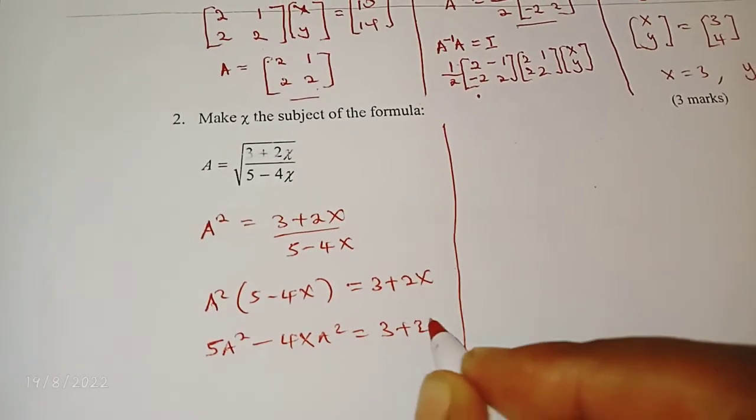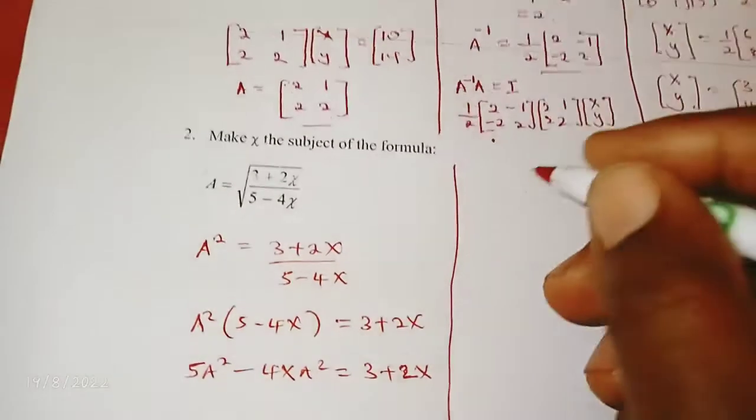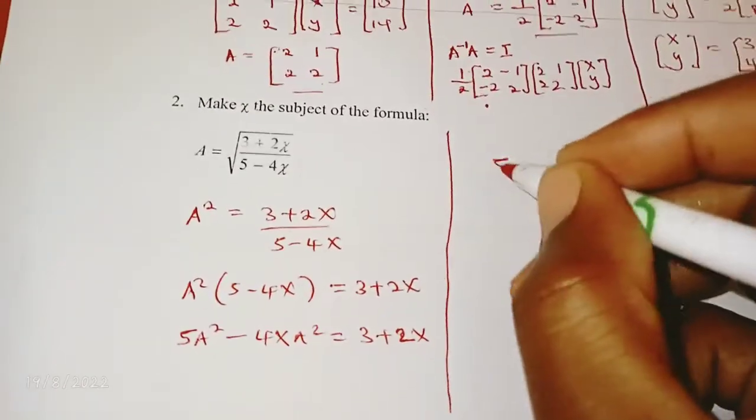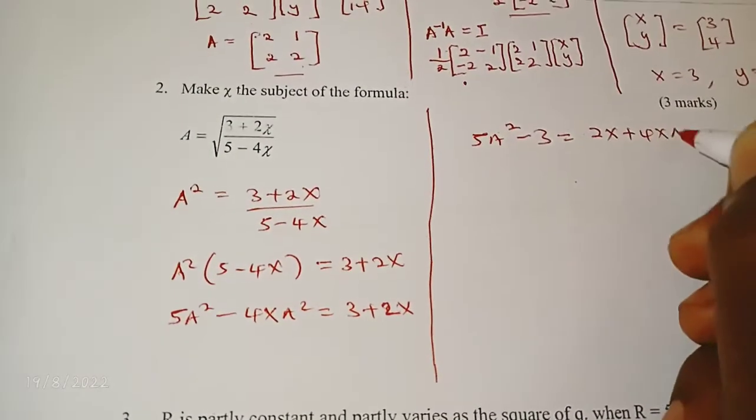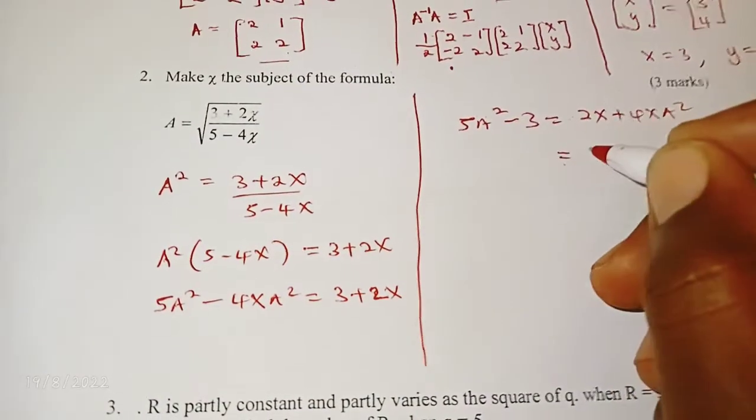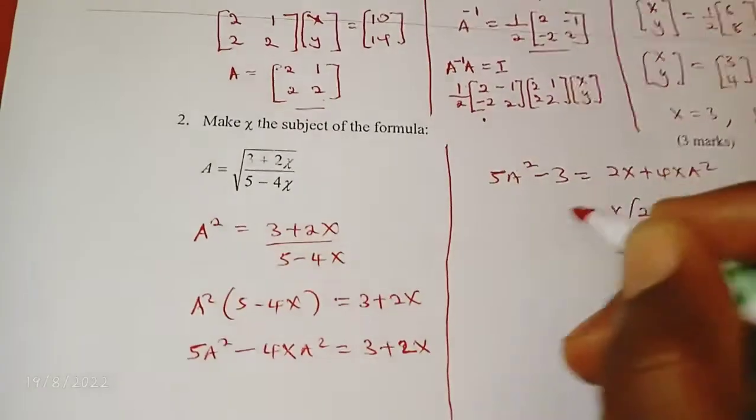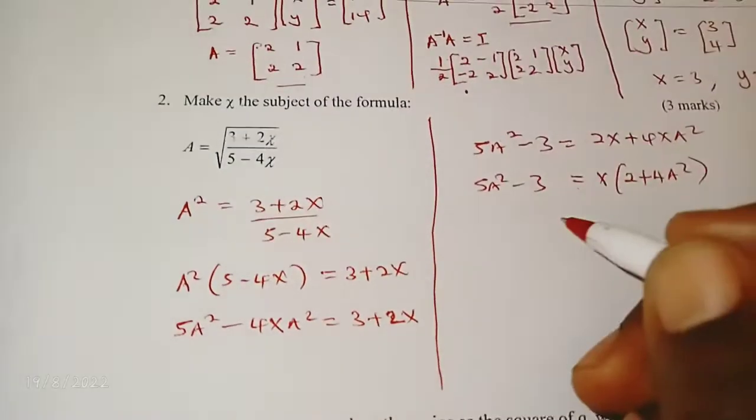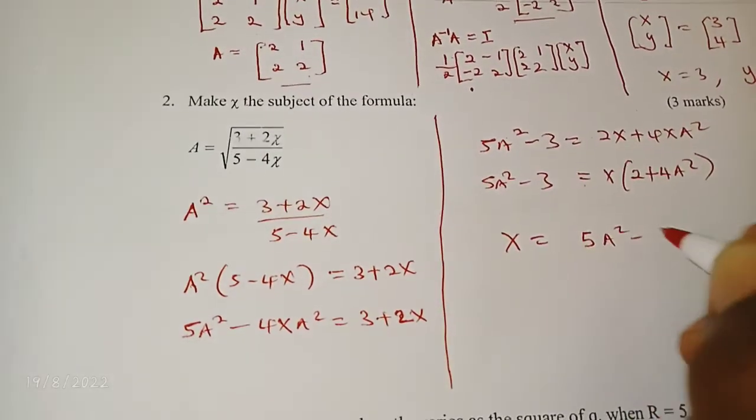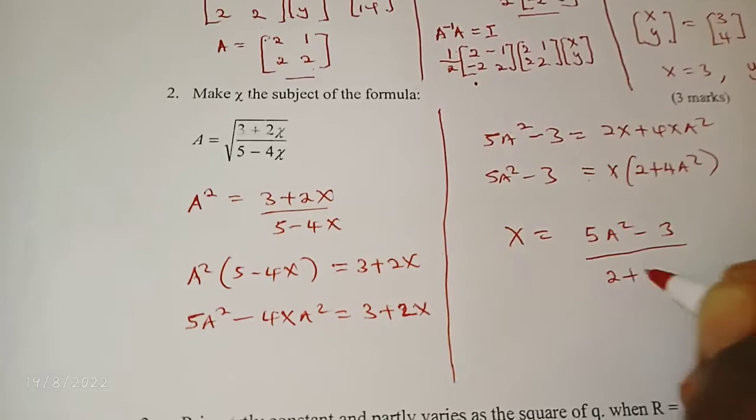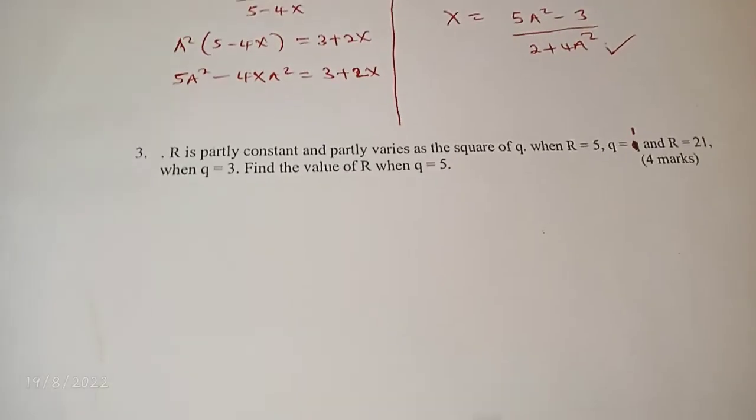Then you distribute A squared. You're going to have 5A squared minus 4xA squared equals 3 plus 2x. You still want to group the x together, like terms together. You have 5A squared minus 3 equals 2x plus 4xA squared. We need to factor x from here: we have (2 + 4A squared) equals 5A squared minus 3. And now x equals (5A squared minus 3) over (2 + 4A squared), and that's how it is done.